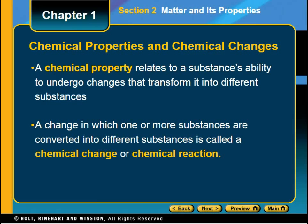We talked about physical properties and physical changes — here's the other end of the spectrum: a chemical property and a chemical change. A chemical property relates to the substance's ability to undergo changes that transform it into a different substance. Is it flammable? Does it react with an acid? Those are chemical properties. A chemical change is one in which one or more substances are converted into something different, also known as a chemical reaction, which is what chemistry students study most often.